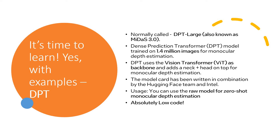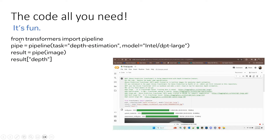We are going to learn some examples quickly. I'll start with DPT, which is Dense Prediction Transformer, trained on 1.4 million images for monocular depth estimation. DPT uses the vision transformer as the backbone, with a neck and head added on top for monocular depth estimation. The model was written in collaboration with the Hugging Face team and Intel. You can use this raw model for zero-shot monocular depth estimation — it is absolutely low code. Just four lines of code: from transformers import pipeline, then set the pipeline task to depth estimation with the model name intel/dpt-large.